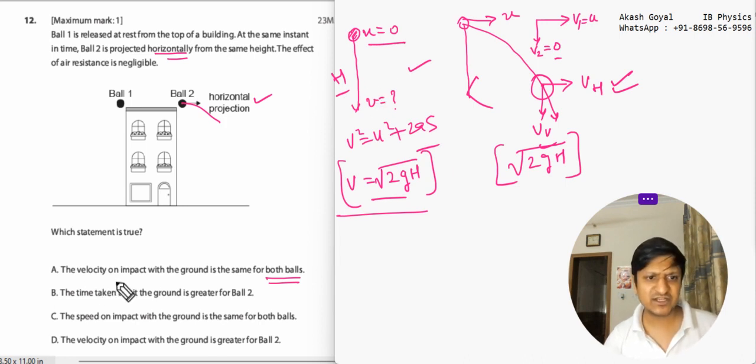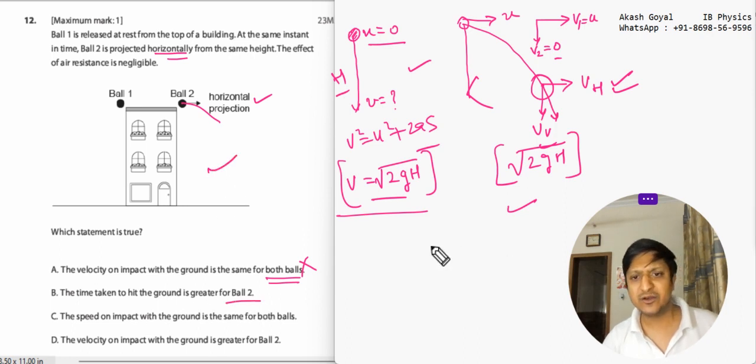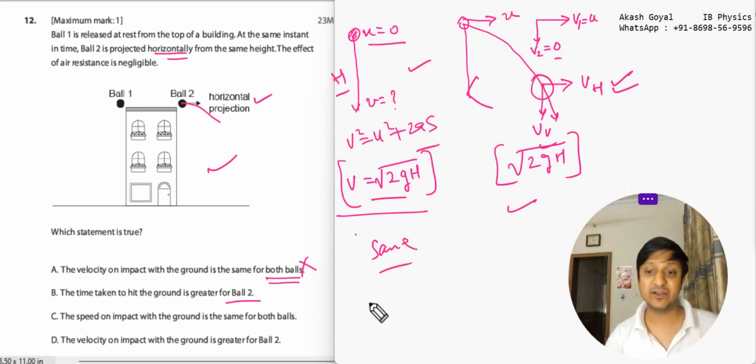So the first option says the velocity of impact with the ground is same - no, definitely not, because it is different. Then, the time taken to hit the ground is greater for ball 2. We already know that the time for both flights is same. But I will tell you how you can understand this concept.